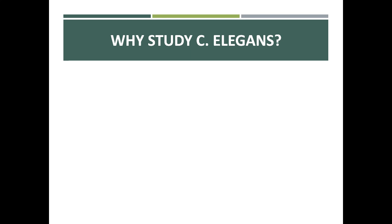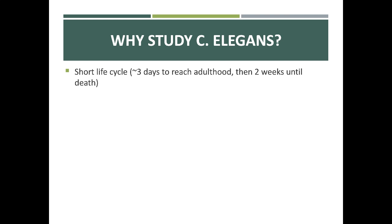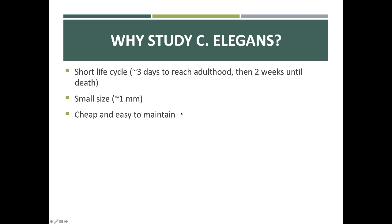C. elegans is one of several really good model organisms that geneticists use. Every model organism has unique features that make it valuable. C. elegans has a very short life cycle — it can go from embryo to adulthood in about three days, with about a two-week lifespan. It's relatively small, which makes studying and storing it easier. C. elegans is also relatively cheap and easy to maintain, which is important because growing a lot of an organism in a lab requires many reagents, and if it's cost-prohibitive it's no longer a viable model organism.